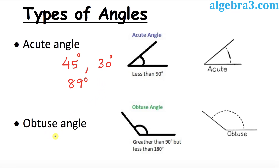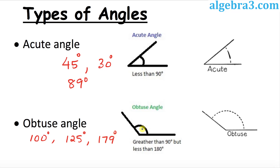How about obtuse angles? They are greater than 90 but less than 180 degrees. So they could be 100 degrees, 125 degrees, or 179 degrees. These are all examples of obtuse angles.